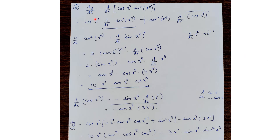Question 6: dy/dx = d/dx[cos(x³)·sin²(x⁵)]. Applying the product rule: cos(x³) · d/dx[sin²(x⁵)] + sin²(x⁵) · d/dx[cos(x³)]. Solving d/dx[sin²(x⁵)] separately: this is d/dx[(sin(x⁵))²] = 2·sin(x⁵) · d/dx[sin(x⁵)] = 2·sin(x⁵)·cos(x⁵)·5x⁴ = 10x⁴·sin(x⁵)·cos(x⁵).